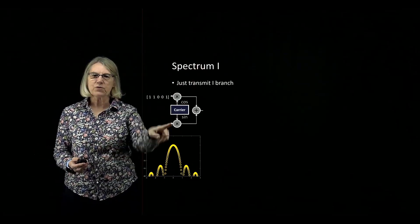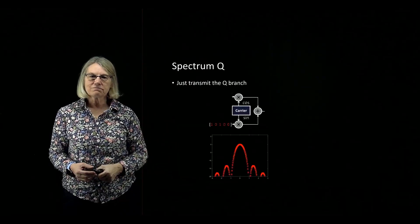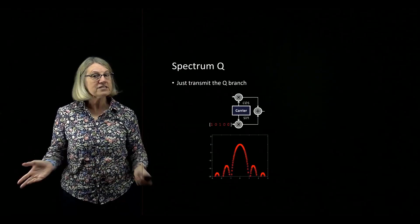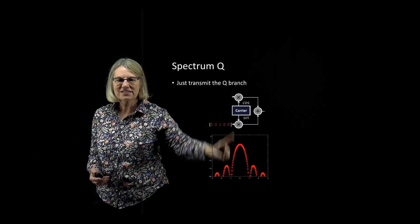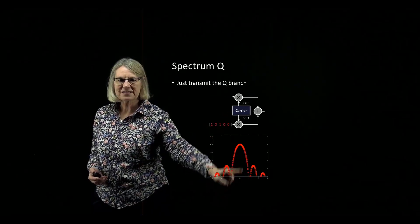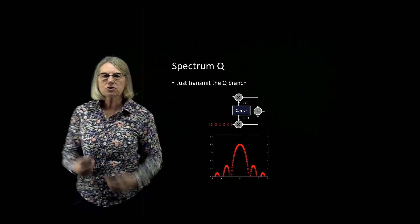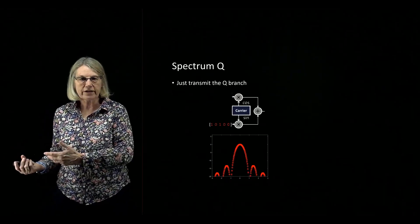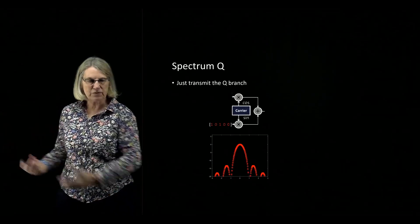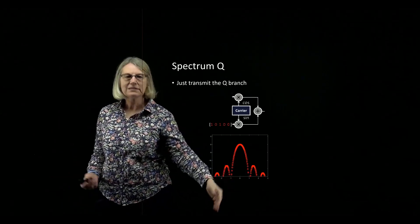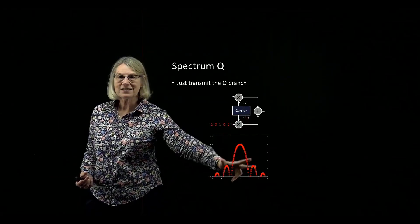Now let's think about what's going on in the Q branch. Something very similar is happening. Here I also have a carrier at the same center frequency, and now the signal is multiplied by a sinusoid. From our Fourier analysis, we know that cosine and sinusoid give us just the same spectrum in terms of amplitude or power spectral density.